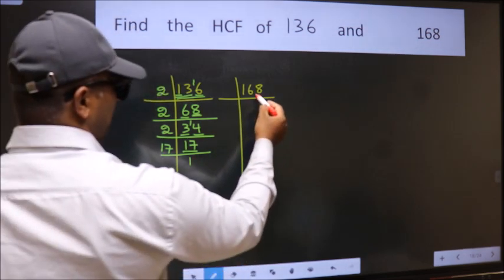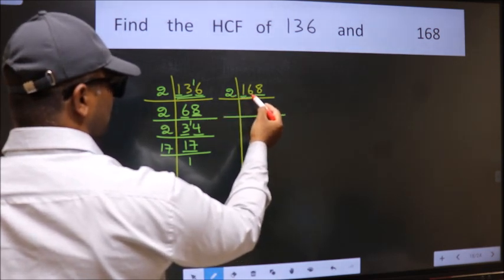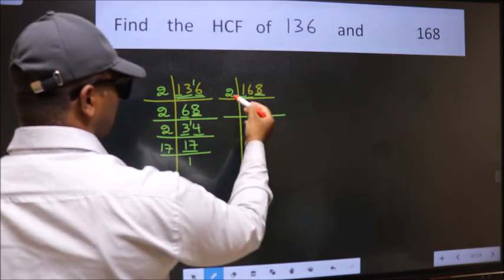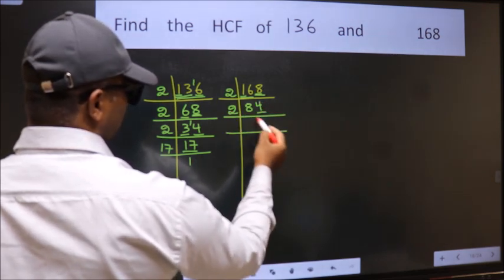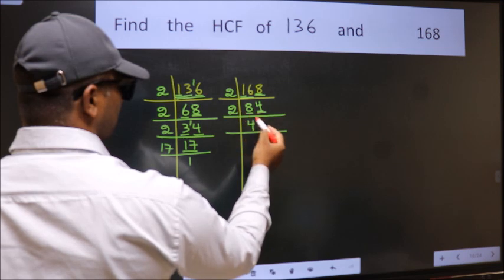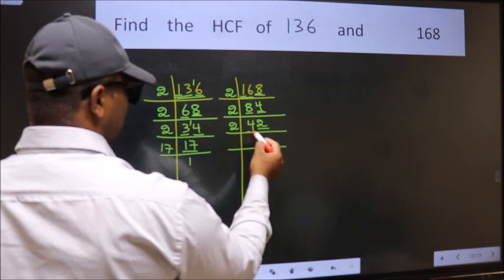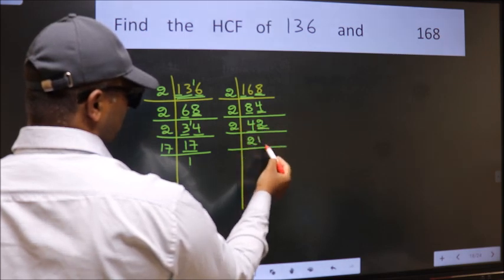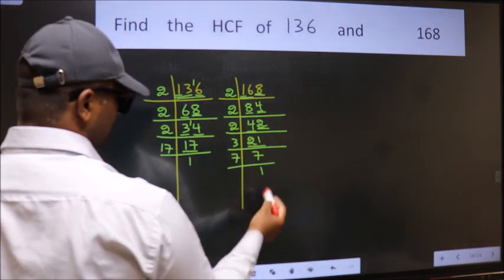Now the other number, 168. Last digit 8, so take 2. The first digit 1 is smaller than 2, so take first two digits: 16. We get 16 in the 2 table as 2 eights are 16. The other number is 8. We get 8 in the 2 table as 2 fours are 8. The other number is 4. We get 4 in the 2 table as 2 twos are 4. Last digit 2, so take 2. First number is 4, and 2 twos are 4. The other number is 2, and 2 ones are 2. Now 21 is 3 sevens. 7 is a prime number, so 7 equals 7 times 1. So 168 = 2 × 2 × 2 × 3 × 7.